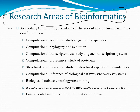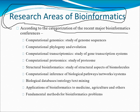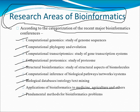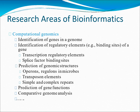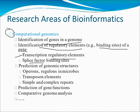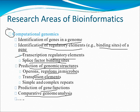Moving to the research areas of bioinformatics — a very important topic. The major categorizations include: computational genomics, computational phylogeny and evolution, computational transcriptomics, computational proteomics, structural bioinformatics, computational inference, biological database applications, bioinformatics for medicine and agriculture, and fundamentals of methods for bioinformatics problems. In computational genomics, this includes identification of genes in a genome, identification of regulatory elements such as binding sites of a gene, transcription factor binding sites, and prediction of genomic structures like operons and regulons in microbes.